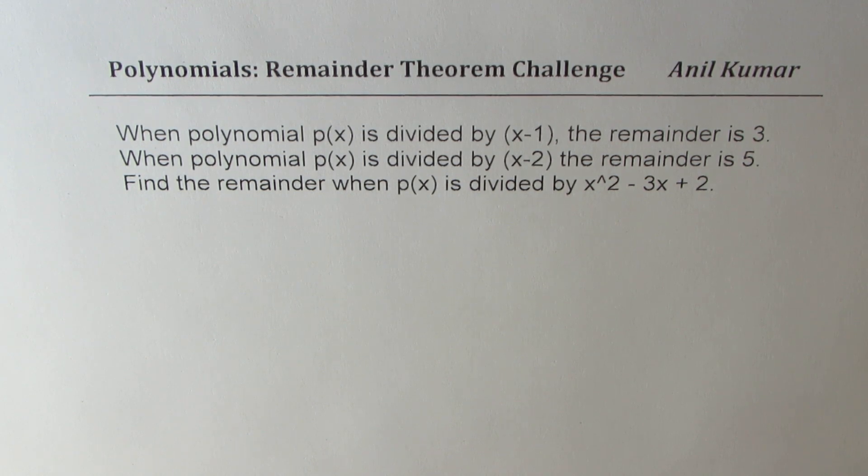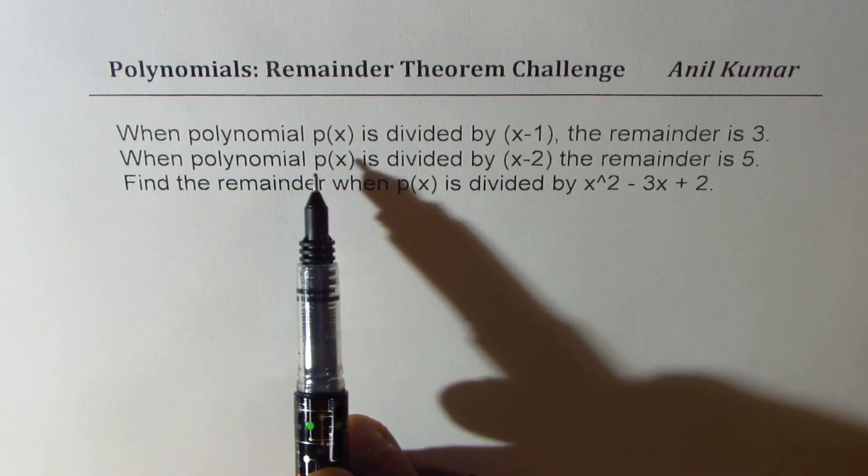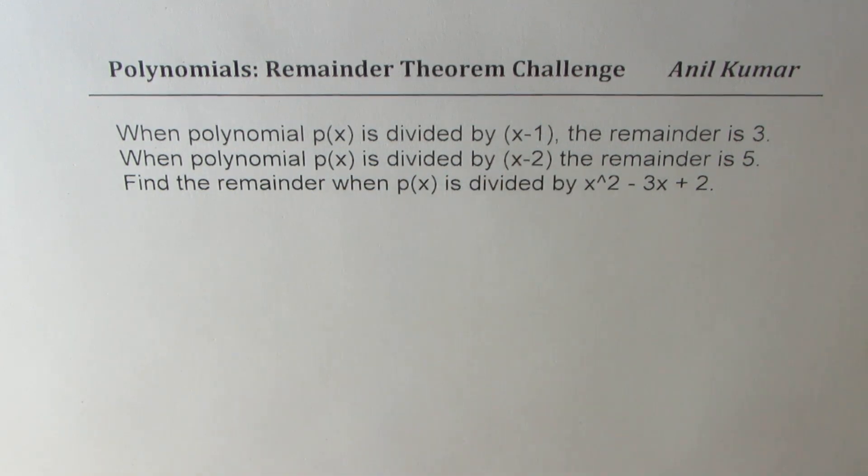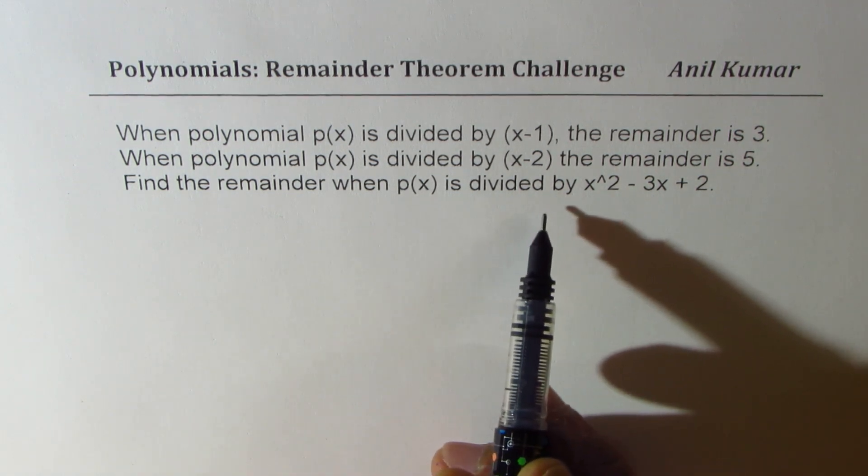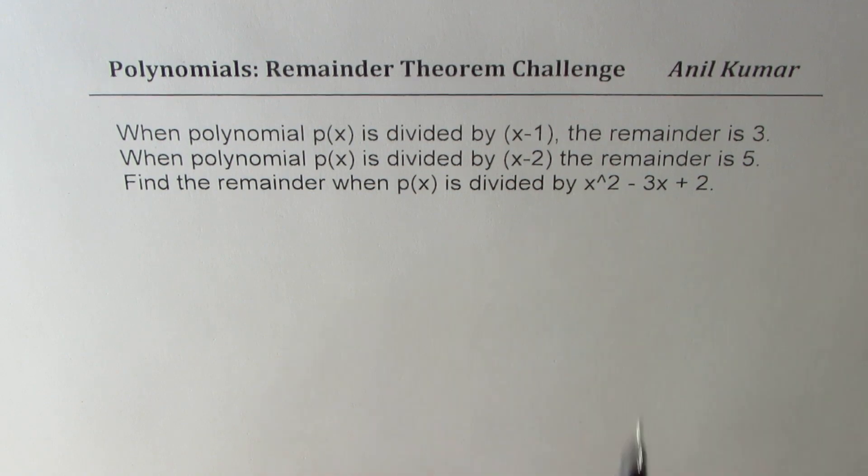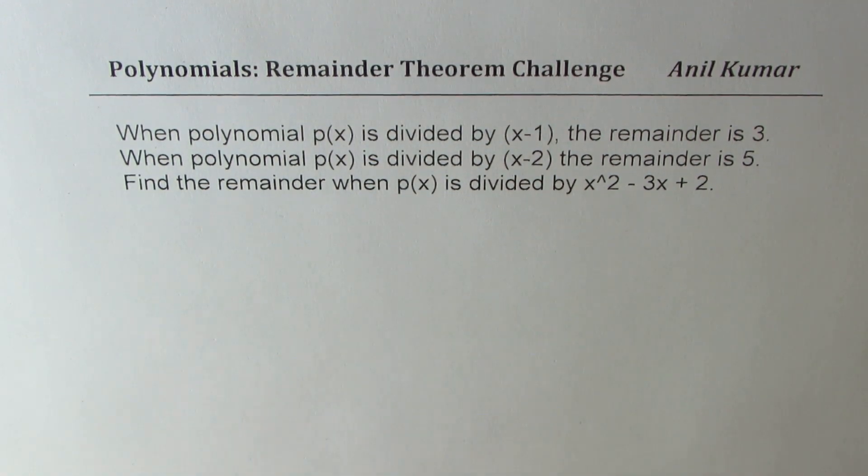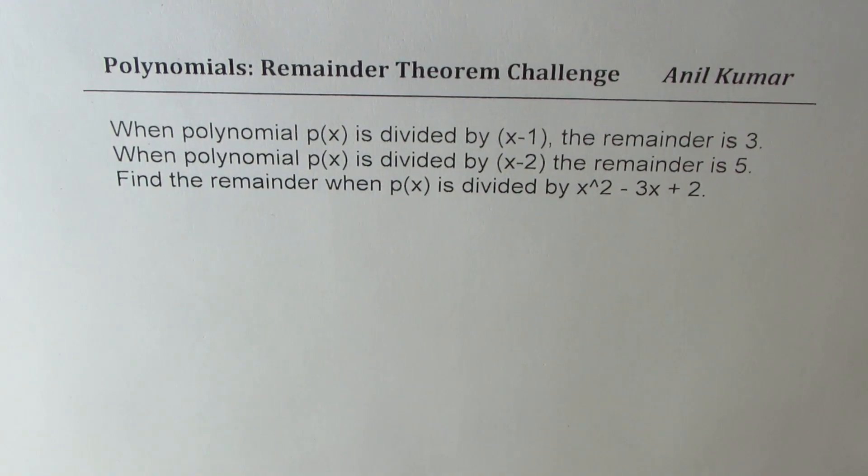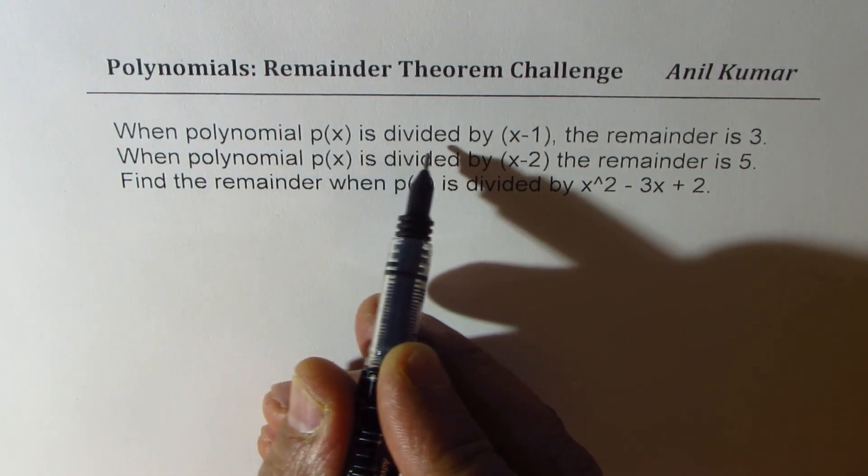When polynomial p(x) is divided by (x-1), the remainder is 3. When polynomial p(x) is divided by (x-2), the remainder is 5. Find the remainder when p(x) is divided by x² - 3x + 2.